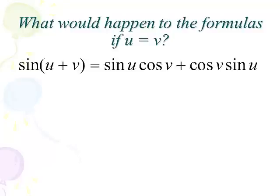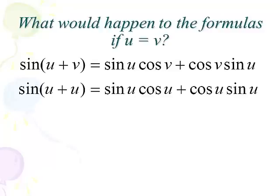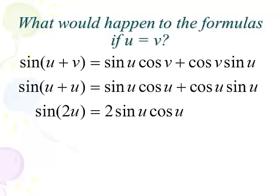Let's start with sine of u plus v, and we're going to let u and v be the same angle. Notice that all the v's will turn to u's, so we've got sine u cosine u plus cosine u sine u. Well, u plus u is 2u, so this is really the sine of 2u. And since multiplication is commutative, we end up with sine 2u equals 2 sine u cosine u. That's our first double angle formula of the lesson.